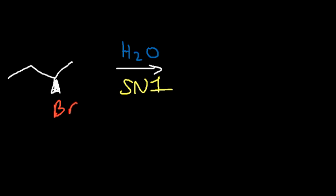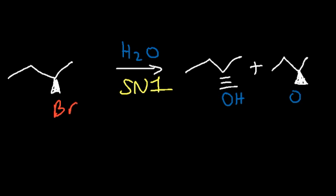What do you think the products of this reaction will be? In an SN1 reaction you can get the inverted product and the retention product — you can get an unequal racemic mixture. When you react an alkyl halide with water it's going to give you an alcohol; you're going to lose one of the hydrogen atoms. It turns out that we get more of the inverted product than the retention product, and we'll talk about why.